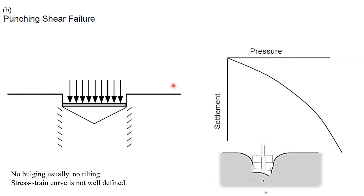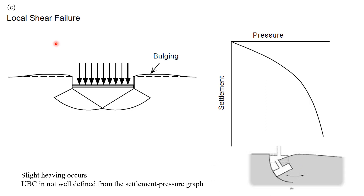In punching shear failure, the footing completely punches into the soil. In local shear failure — the third mode — slight heaving occurs, it is a mixture of both previous shear failures: slight bulging occurs, some punching occurs, and the bearing capacity is not well-defined from the settlement-pressure curve. Bulging is negligible but there is also tilting. That is local shear failure.